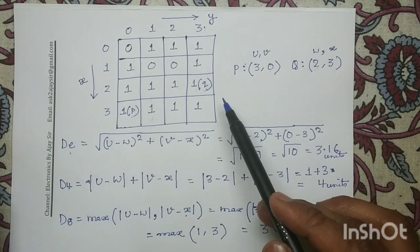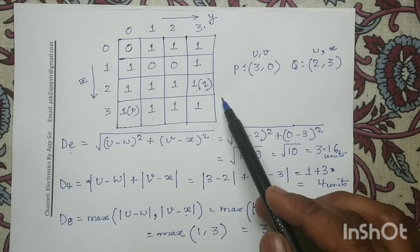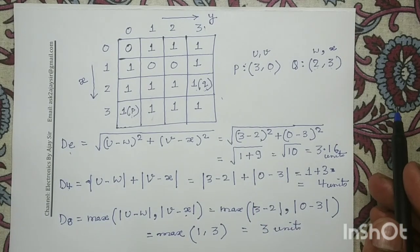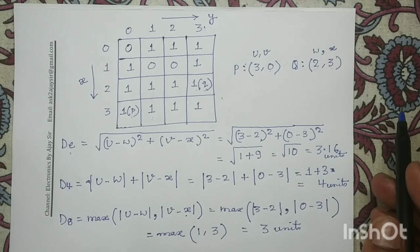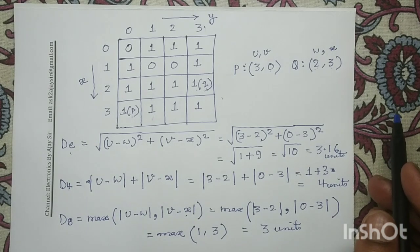So for this given question between pixel P and Q, we have determined the Euclidean distance, D4 distance, and D8 distance. And with this, this question is over. Thank you.